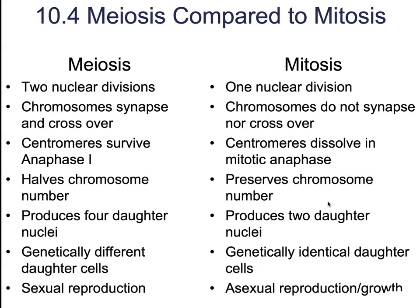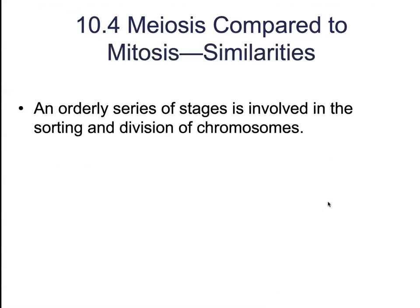Finally, meiosis is only used for sexual reproduction. Mitosis is going to be used for asexual reproduction, or growth, or repair, depending on whatever the organism needs at the moment.